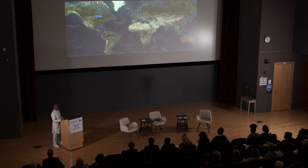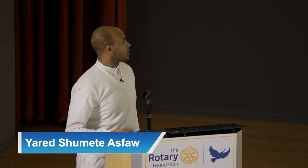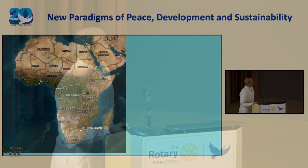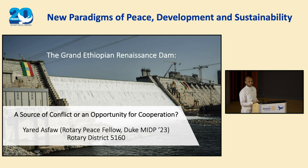In the following couple of minutes, I'm going to take you back to Africa, to the mother continent Africa, to three countries — Ethiopia, Egypt, and Sudan — and talk about one mega project by Ethiopia called the Grand Ethiopian Renaissance Dam, and see whether this dam is a source of conflict or cooperation in the region.